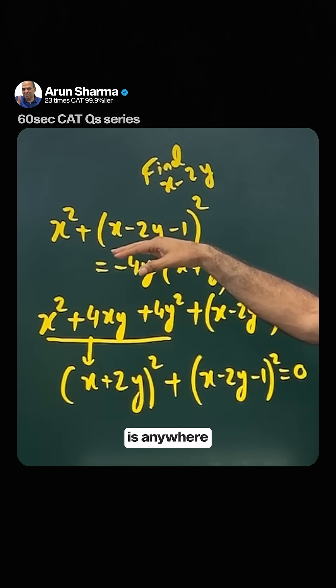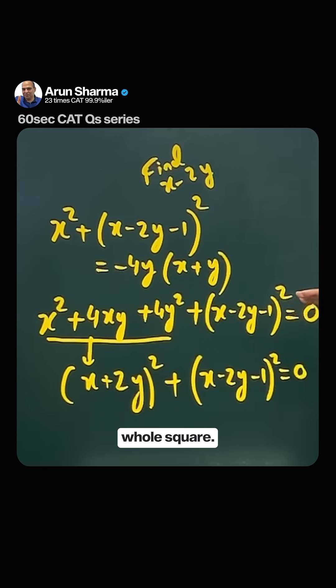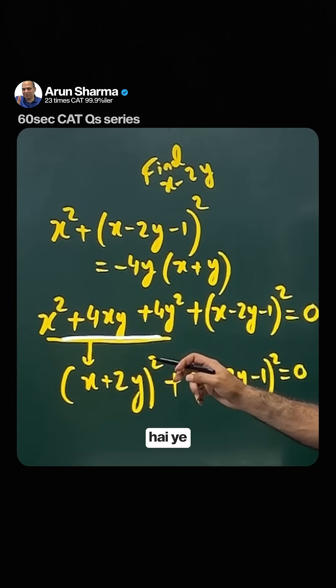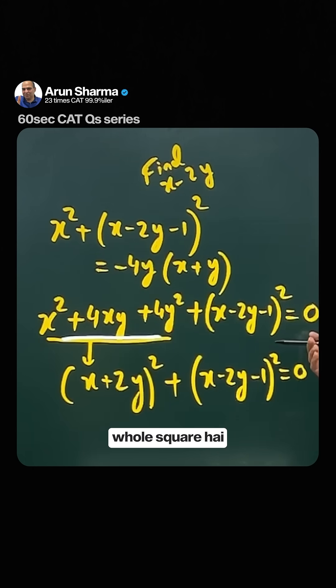And this term is anyway of x² x minus 2y minus 1 whole square. After that, you have to be able to recognize that this part is a perfect square which means x plus 2y whole square, and this part of course, x minus 2y minus 1 whole square.